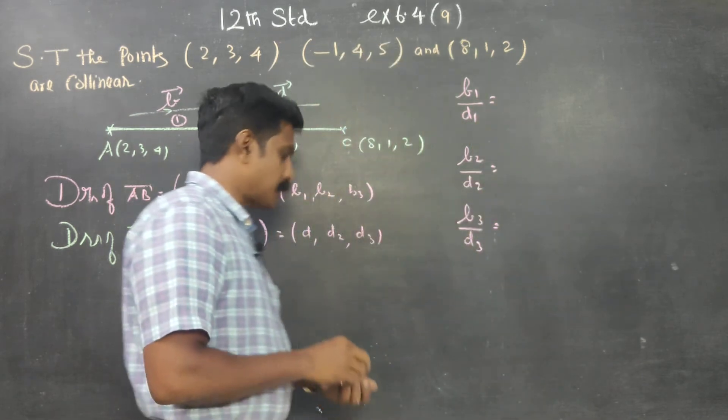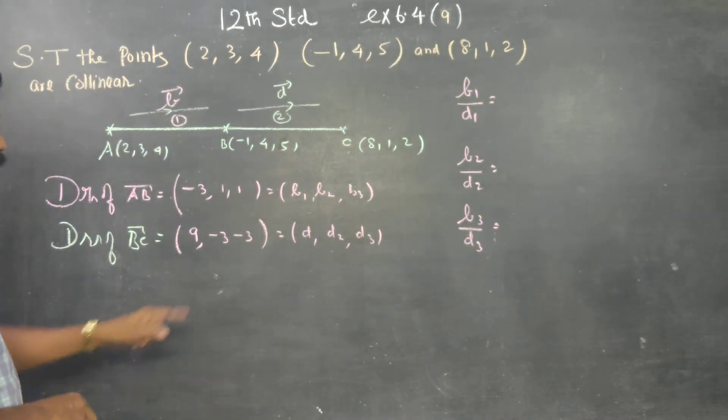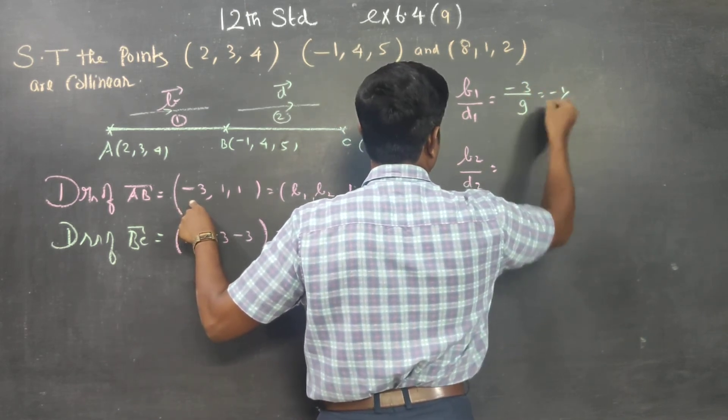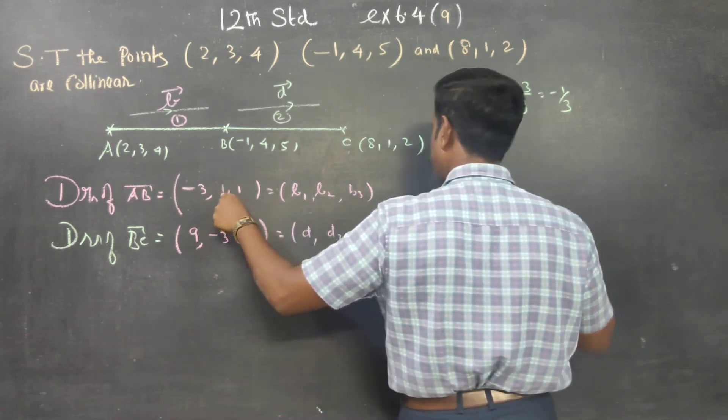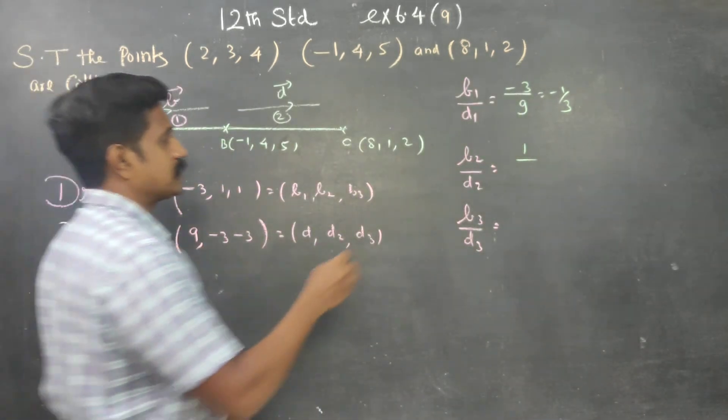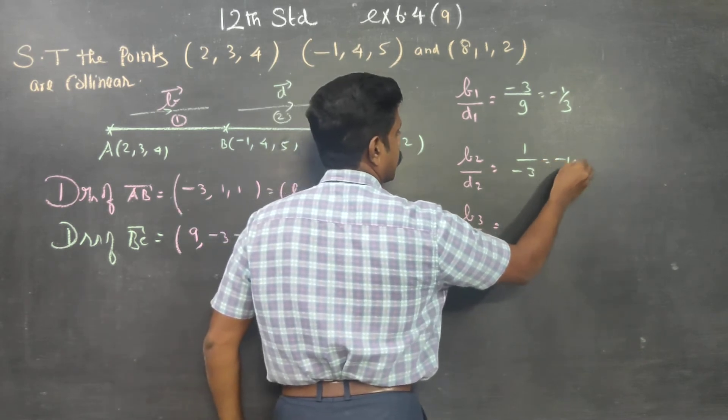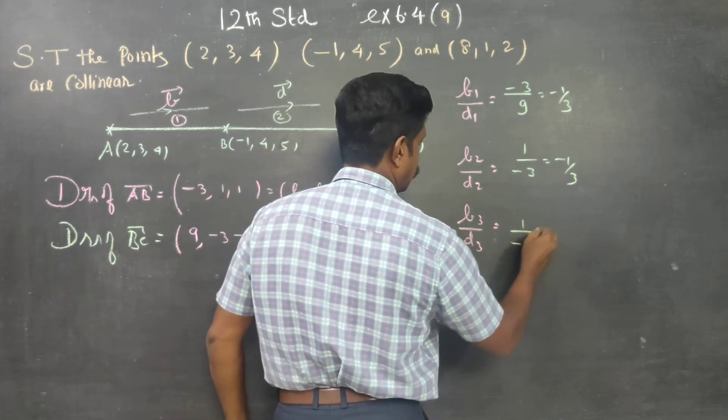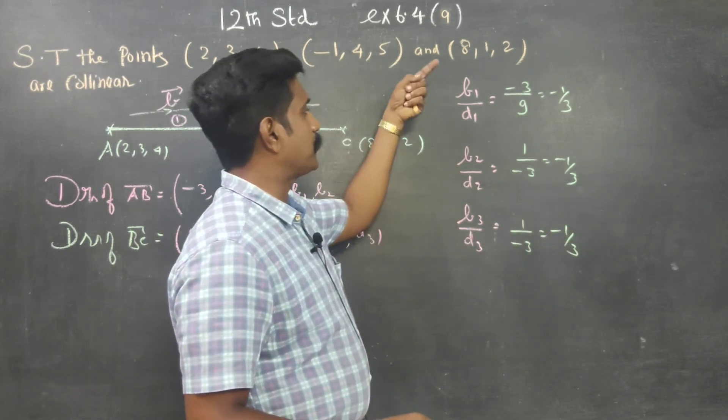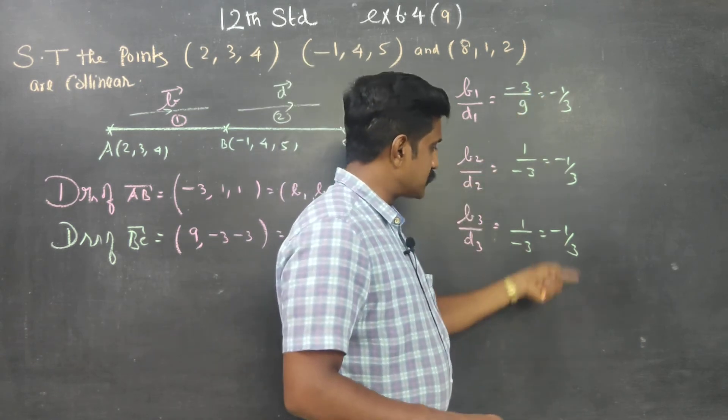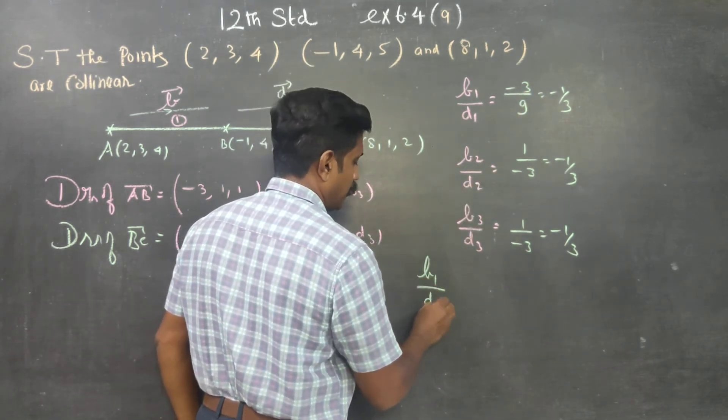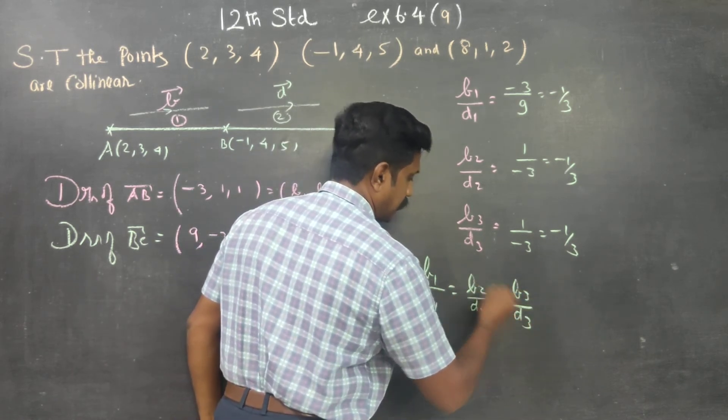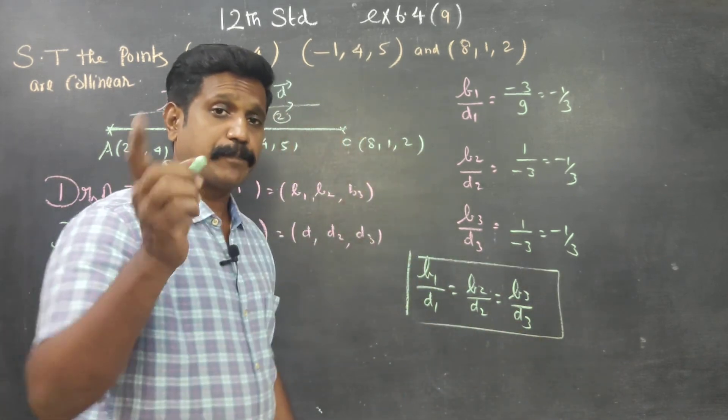Now, I use the parallel condition. What is my B1? My B1 is minus 3 by 9, answer is minus 1 by 3. What is my B2? B2 is 1 by minus 3, answer is minus 1 by 3. What is my B3? B3 is 1 by minus 3, answer is minus 1 by 3. This is my B1 by D1, B2 by D2, B3 by D3. These are all same. B1 by D1 is equal to B2 by D2 is equal to B3 by D3. This is the condition for parallel lines.